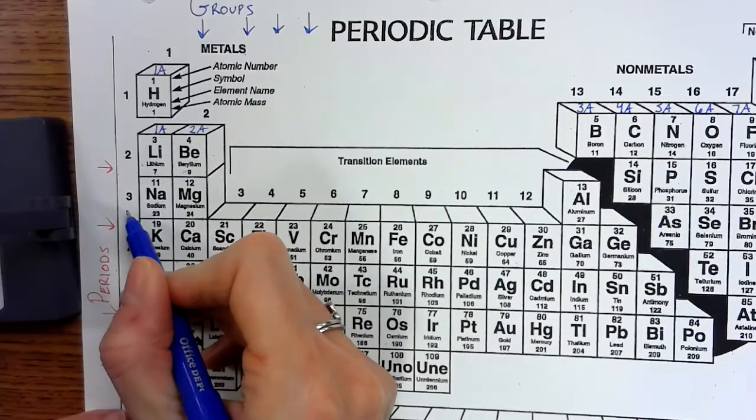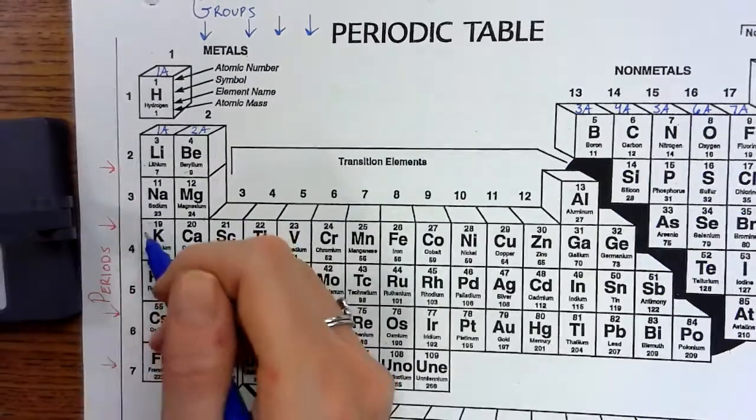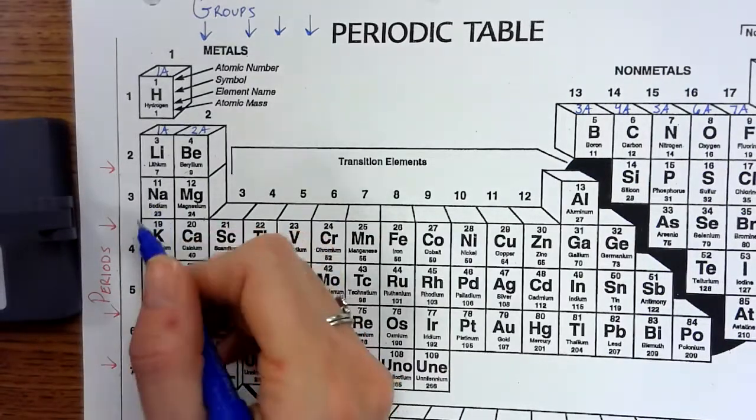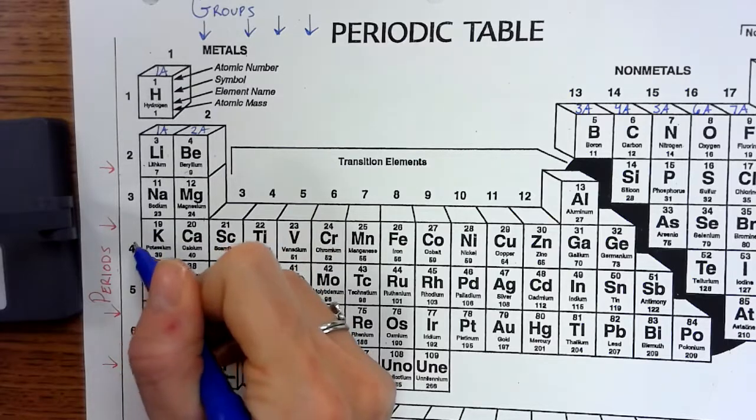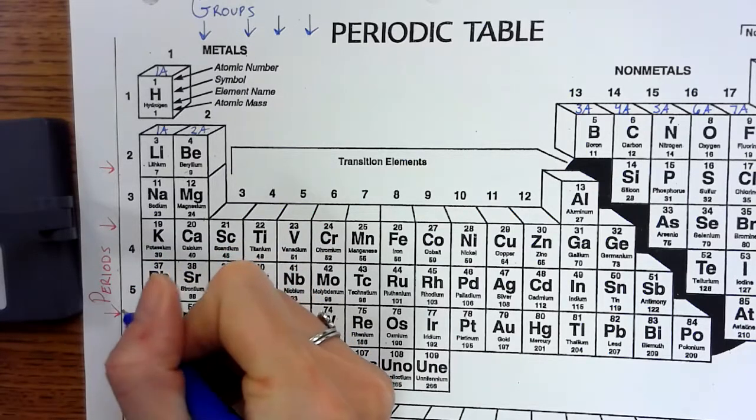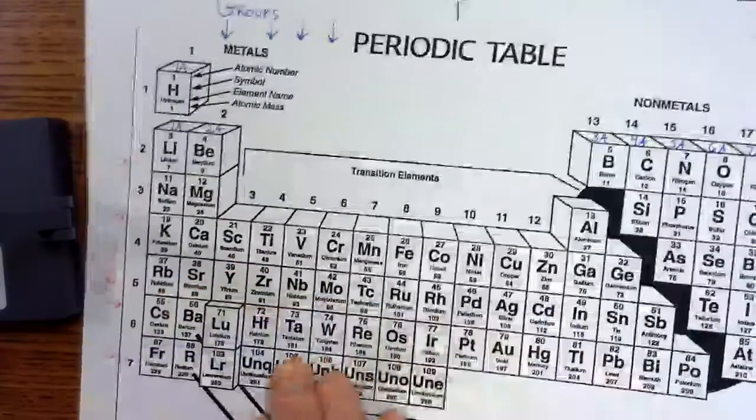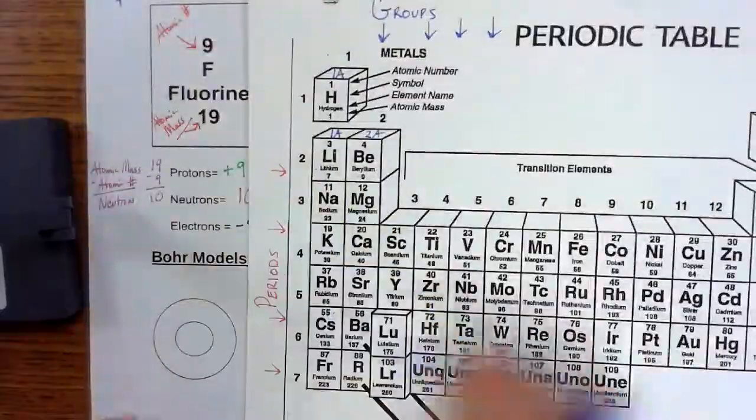Period three, sodium, magnesium, aluminum, silicon, phosphorus, sulfur, chlorine, argon, three shells. Everything in period four, four shells, period five, five shells, so on and so forth. So it's a nice little cheat sheet.